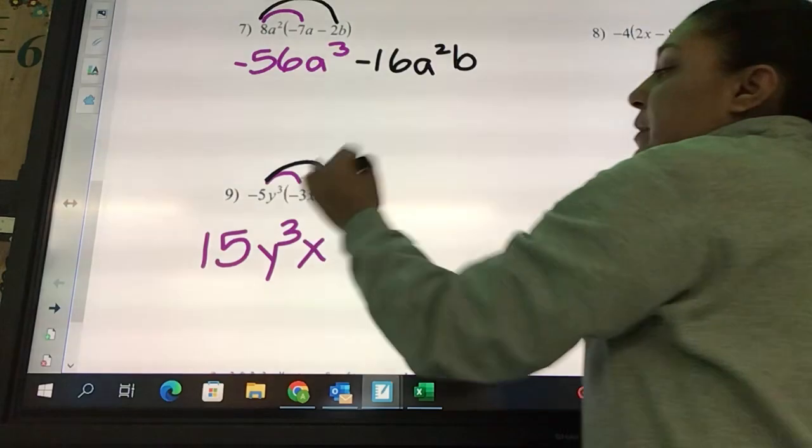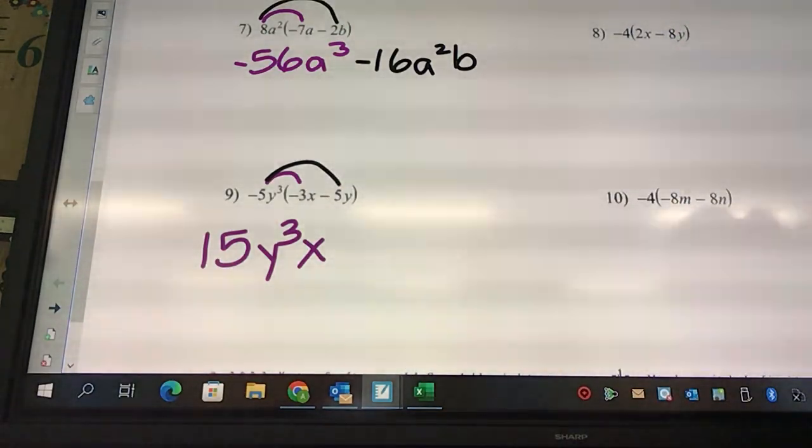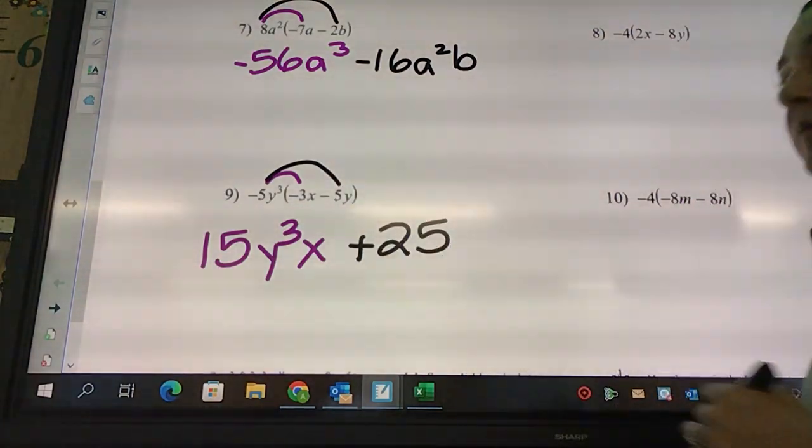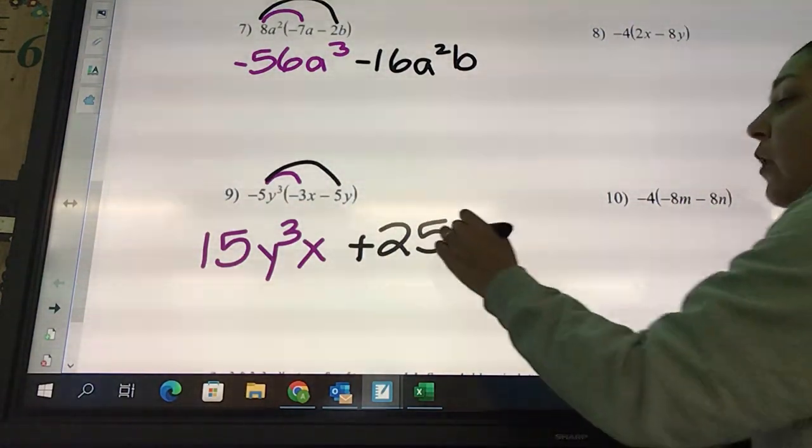Negative five times negative five is positive 25. What's my letters going to look like? y⁴.